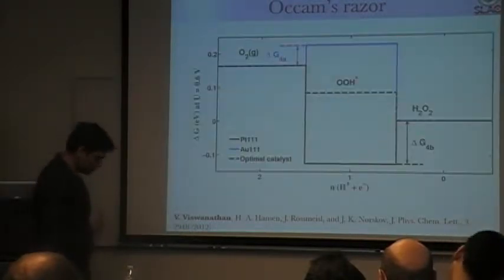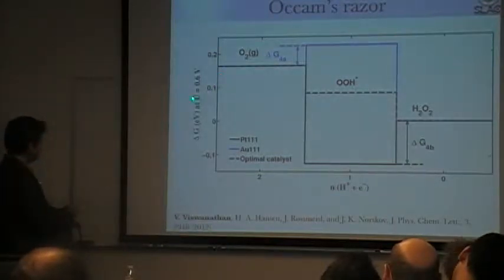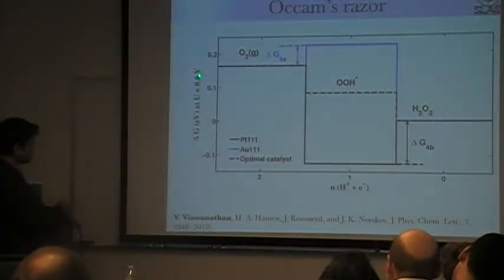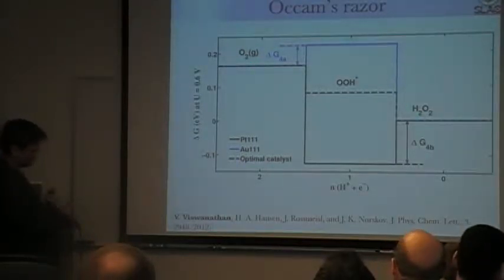Now, let's take the same sort of understanding, the free energy diagram. This is now plotted at a potential of 0.6. At 0.68, hydrogen peroxide and oxygen are in equilibrium.